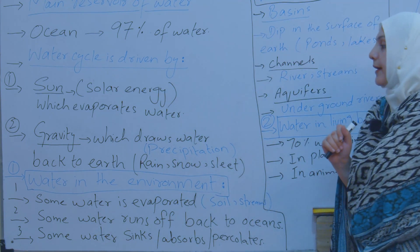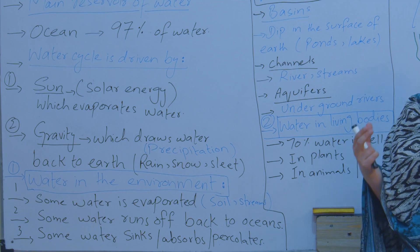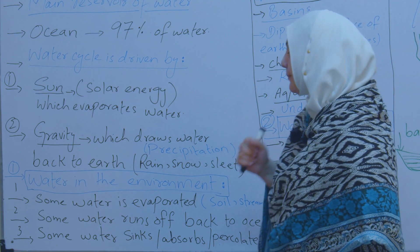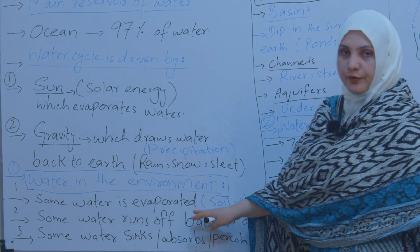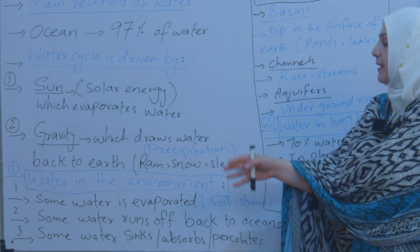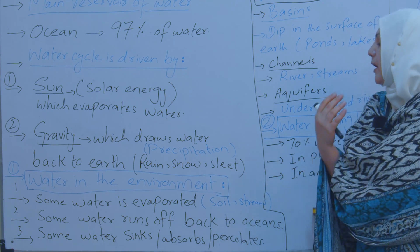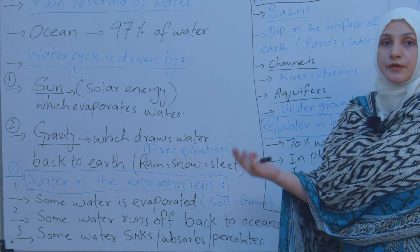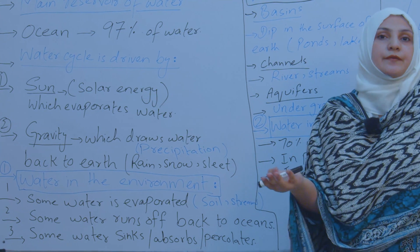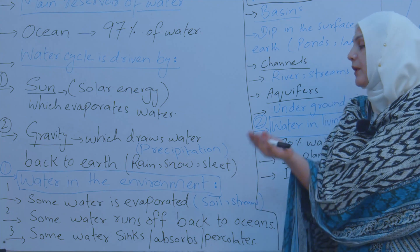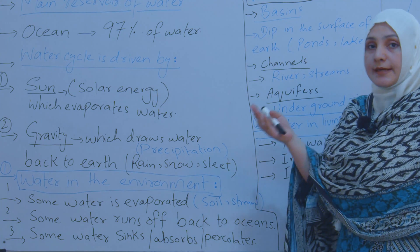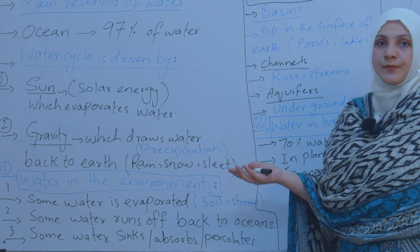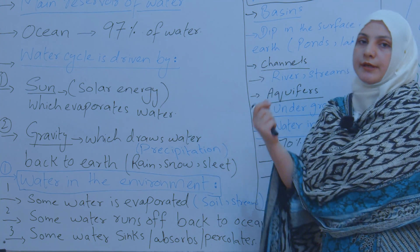Now, where do we observe water in the environment? Some water is continuously evaporated from the surface of the earth — from the soil, from water reservoirs. The force behind this evaporation is definitely solar energy — heat energy, sunlight, sun's solar energy. Water is continuously evaporated from streams, rivers, and oceans.